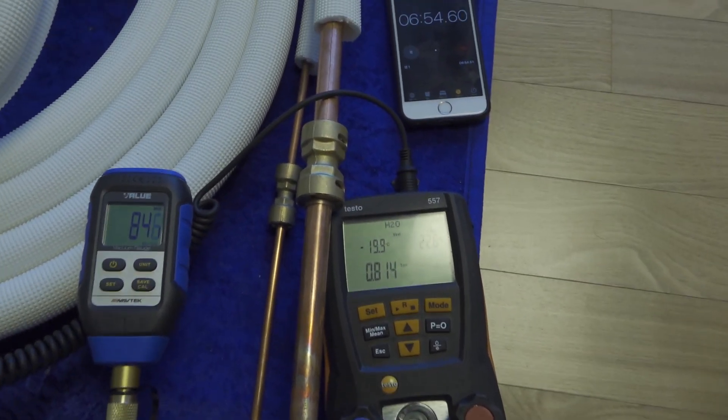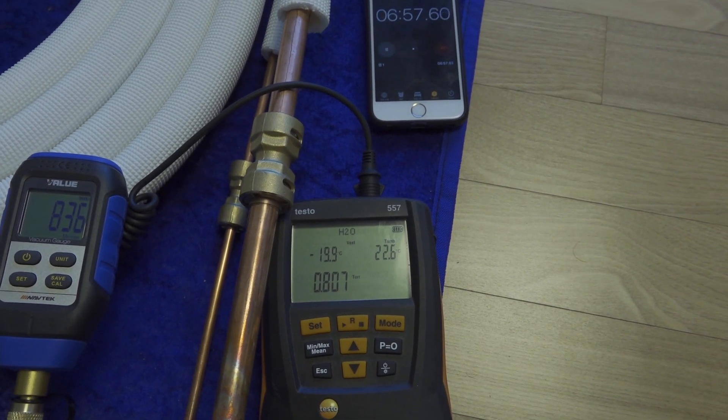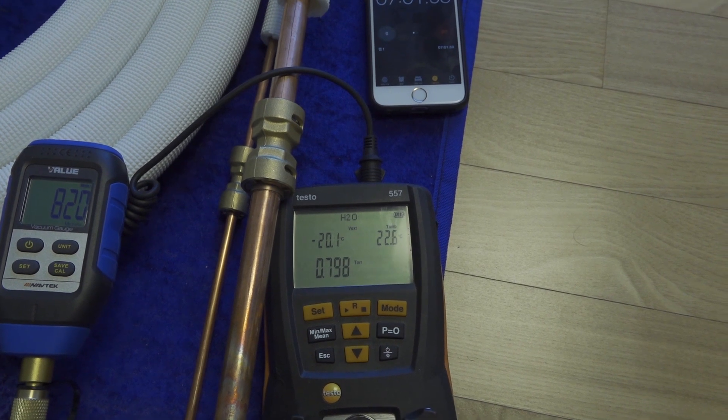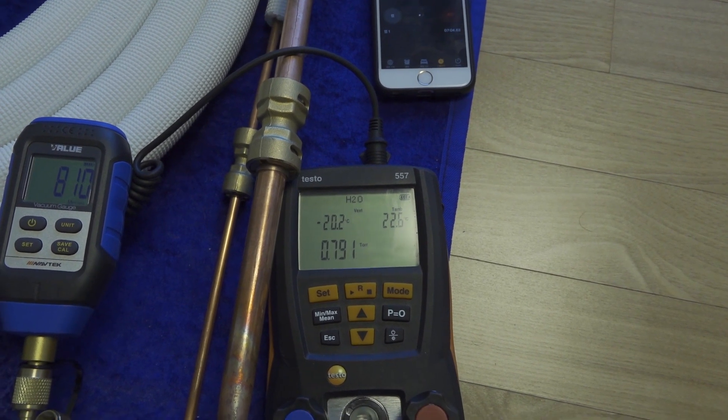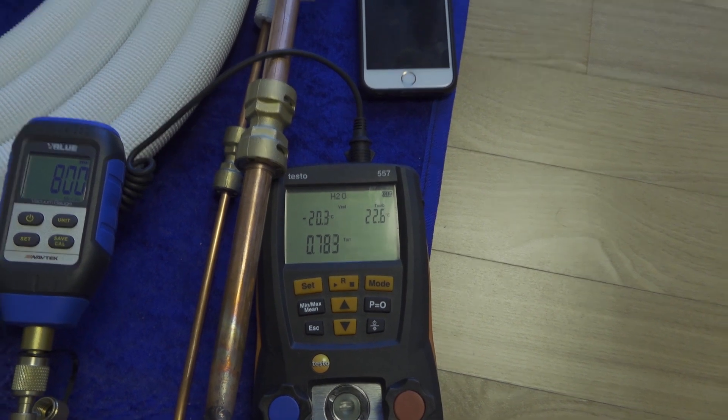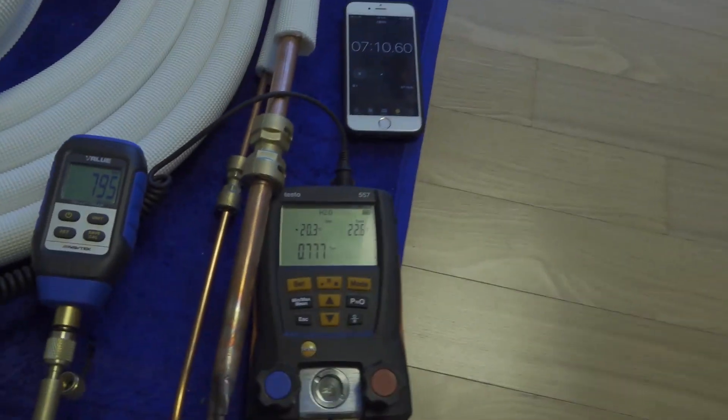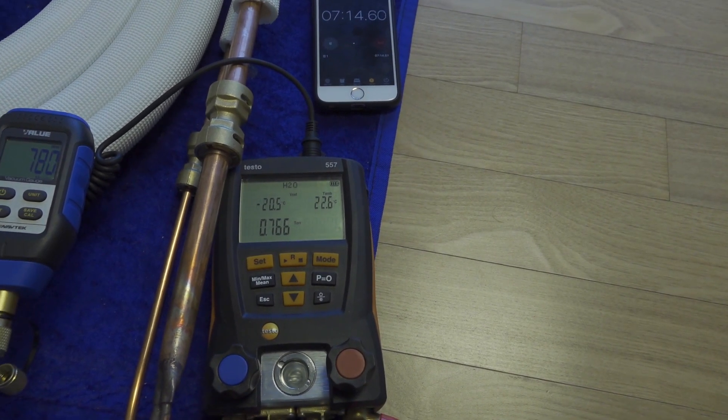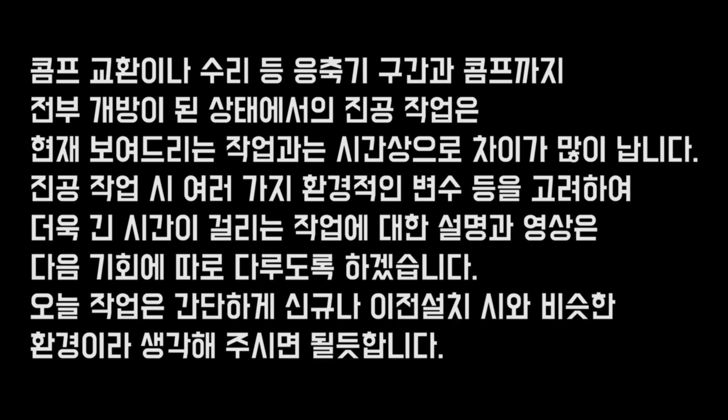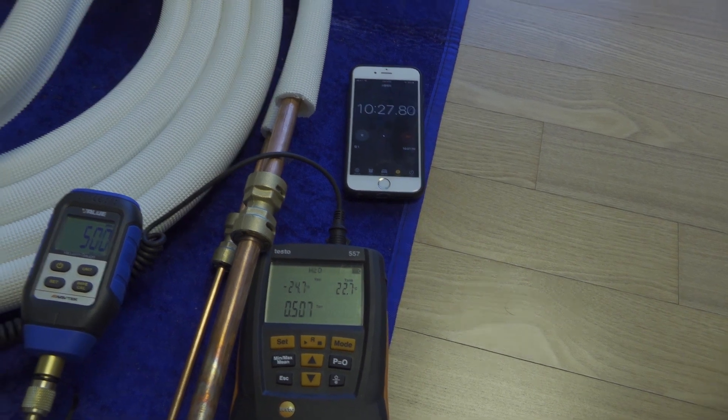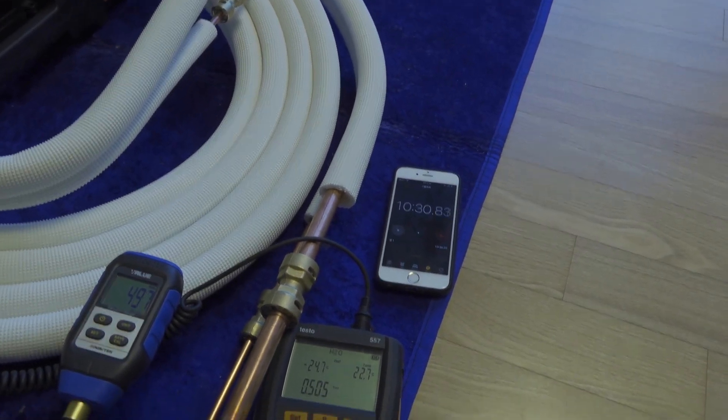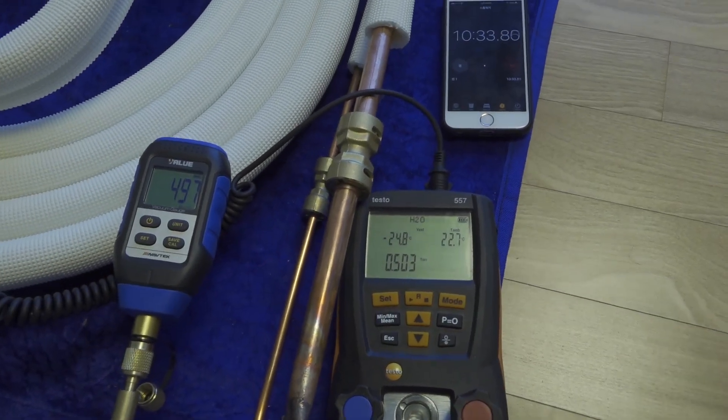In this setup, we're actually pulling vacuum excluding any evaporator or condenser. Usually when we pull vacuum on new piping, we do it with the condenser excluded, so only the evaporator side is open. It doesn't take that long to reach 0.5 Torr with about 5 meters.